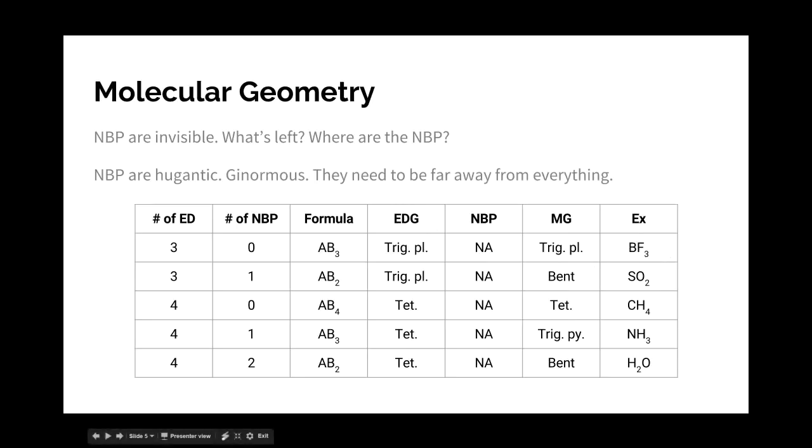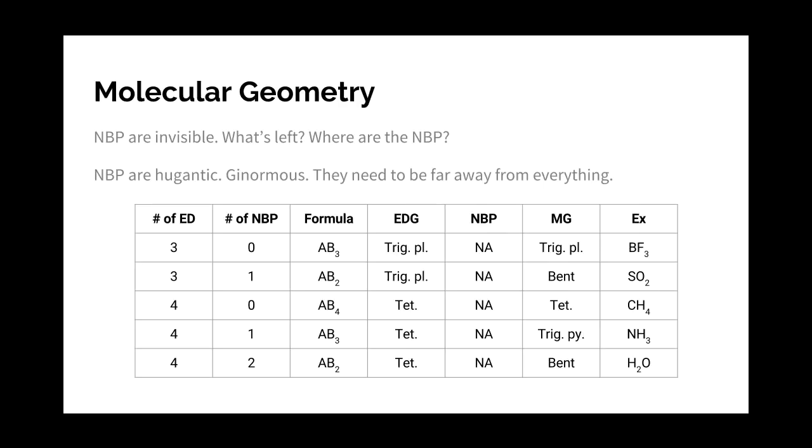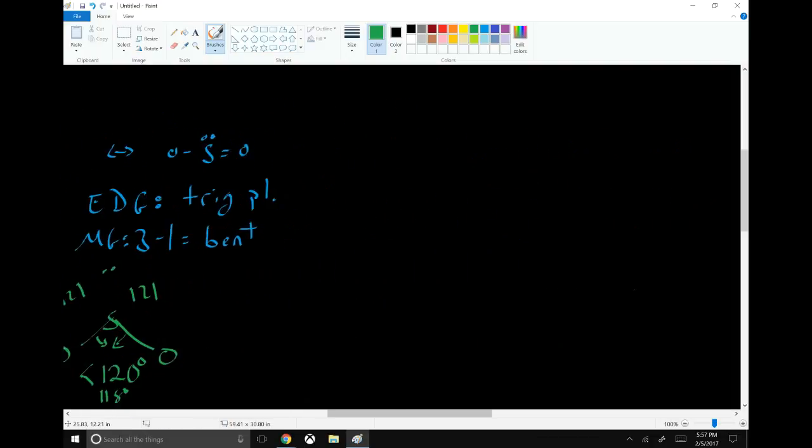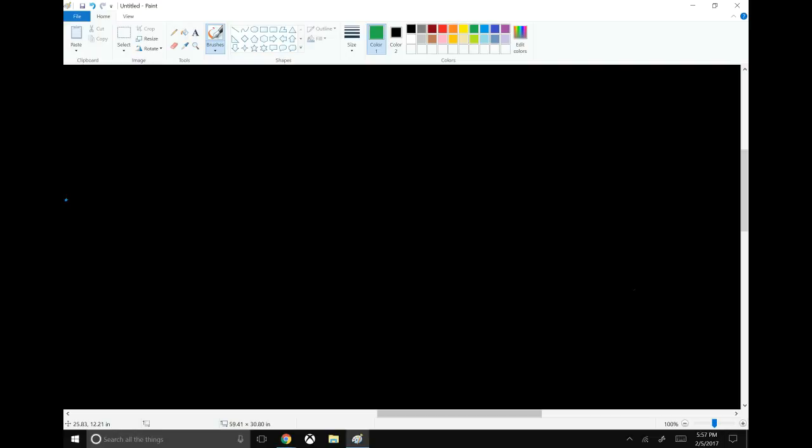And that does it for the three electron domains. Because if you take away more than one, you're just going to be left with two atoms bound together. And that's very straightforward. So our next up is going to be 4 and 0. For that, our example is CH4, or methane.